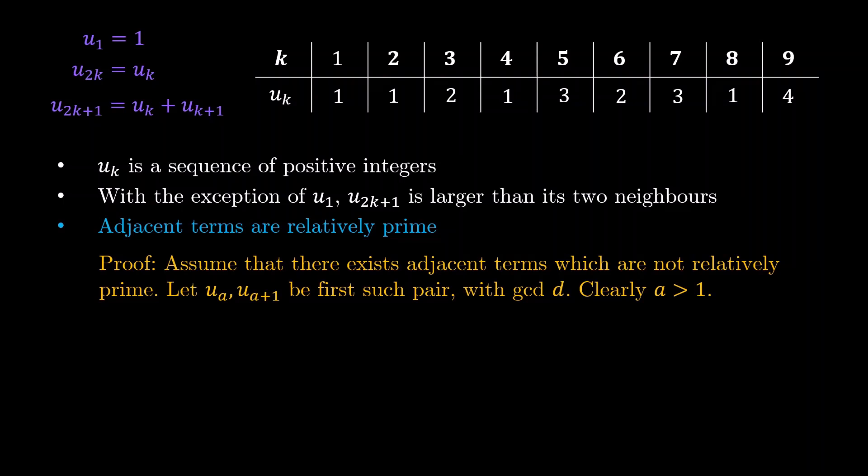We will assume that there exist adjacent terms which are not relatively prime. Now let us consider ua, ua+1 as the first such pair, where the GCD is actually greater than 1. Now clearly a will be bigger than 1 because 1, 1 is a pair of terms which are relatively prime. So u1, u2 will not qualify. Okay, what do we do now?